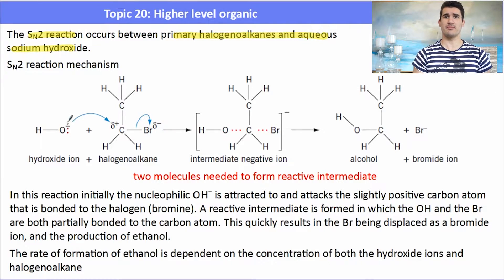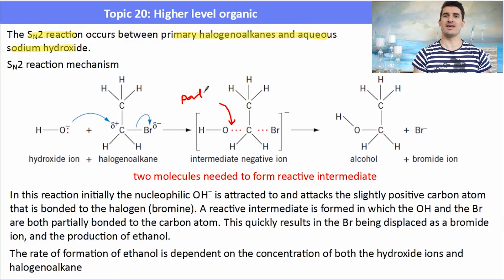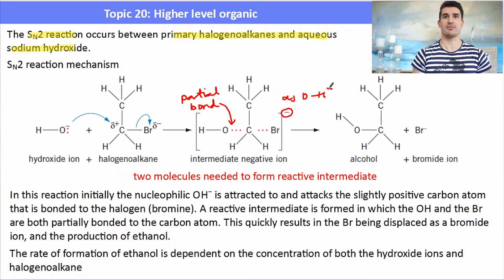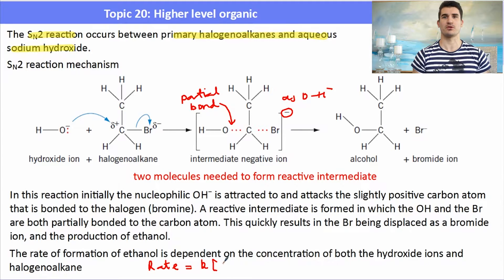The SN2 reaction between a primary halogeno alkane and aqueous sodium hydroxide has the following mechanism: the nucleophile with its lone pair of electrons attacks a positively charged carbon atom, because the bromine takes away the electrons in the bond between carbon and bromine. That allows us to form an intermediate where the hydroxide is partially bonded to the positively charged carbon and the bromine is still partially bonded to that carbon, giving a negative charge. This is known as the intermediate.